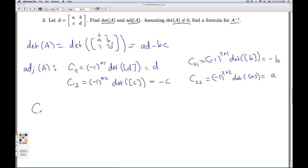So from this, I can make the cofactor matrix. The cofactor matrix is you just put the cofactors in C1,1, C1,2, C2,1, C2,2. So C1,1 is D, C1,2 is the opposite of C, C2,1 is the opposite of B, C2,2 is A.